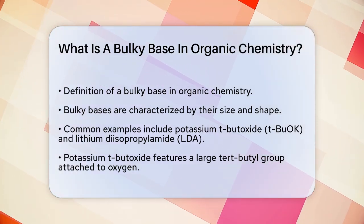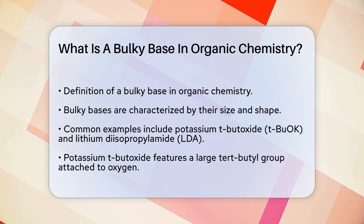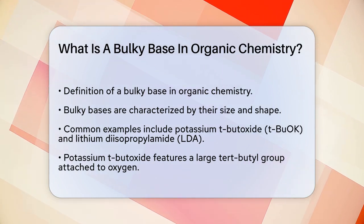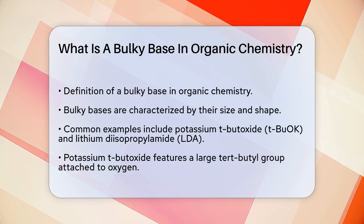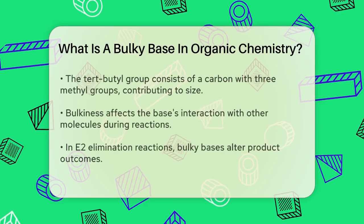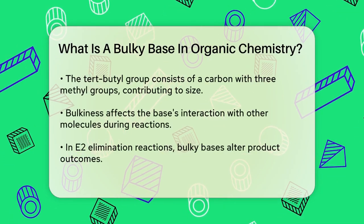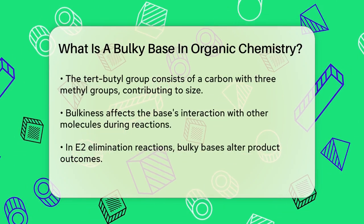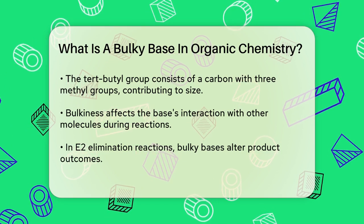To understand why these bases are bulky, let's look at their structure. Potassium t-butoxide, for example, has a large tert-butyl group attached to the oxygen atom. This group is essentially a carbon with three methyl groups attached, making it quite large and cumbersome.